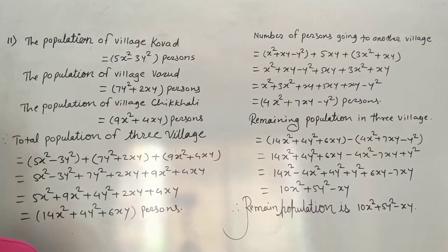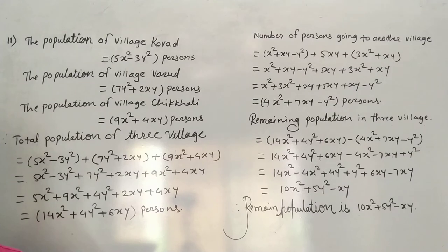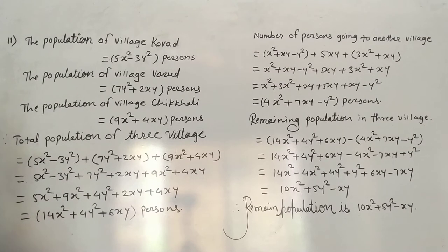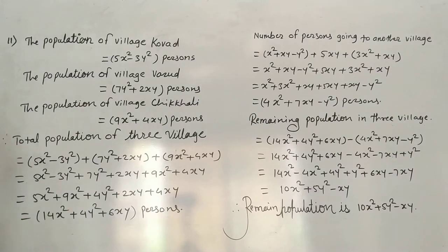Question number 11: At the end of the year 2016, the population of village Forward is 5x² - 3y², village Barul is 7y² + 2xy, and village Chikli is 9x² + 4xy.